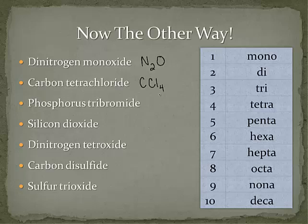Phosphorus tribromide: we have phosphorus with no prefix, so there's only one. Then we write bromine's symbol Br — tri means three bromine atoms — giving us PBr₃. Silicon is another metalloid, but we name it just the same. We write the symbol Si, no prefix so just one silicon, and dioxide means O₂, giving us SiO₂.